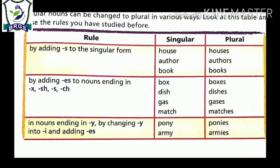Next is by adding ES to nouns ending in X, SH, S, or CH. We have been given various nouns ending in X like box, dish ending in SH, gas ending in S, and match ending in CH. See the last letters. All nouns whose ending letters are X, SH, S, or CH will carry ES at their end to make them plural. Box becomes boxes, dish becomes dishes, gas becomes gases, match becomes matches.